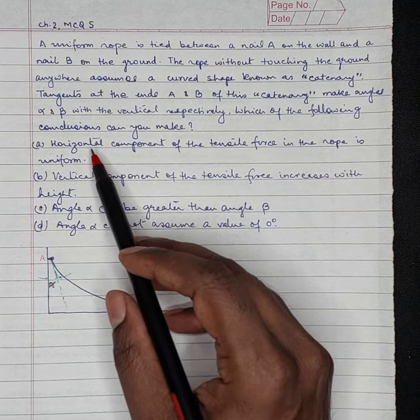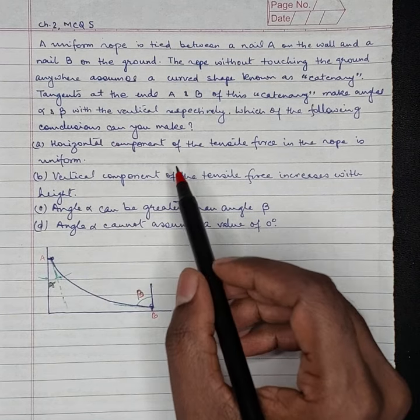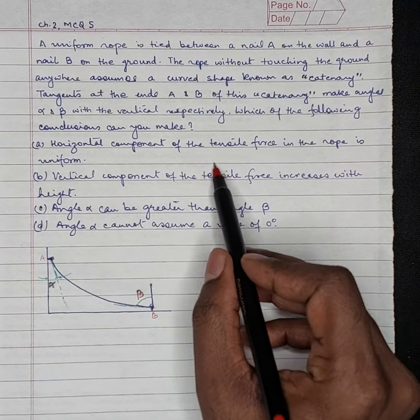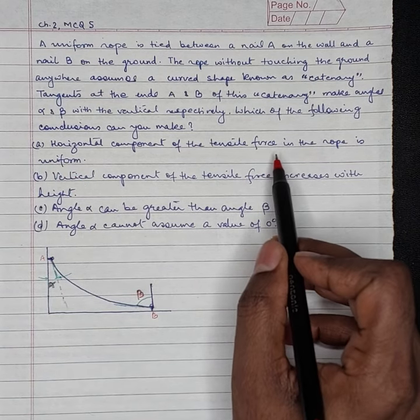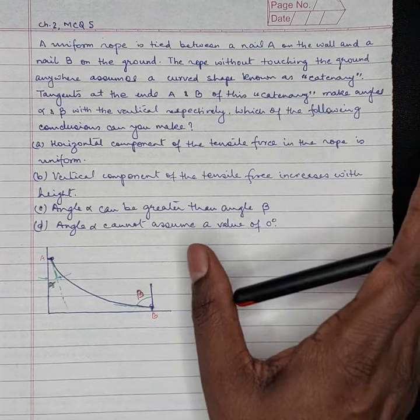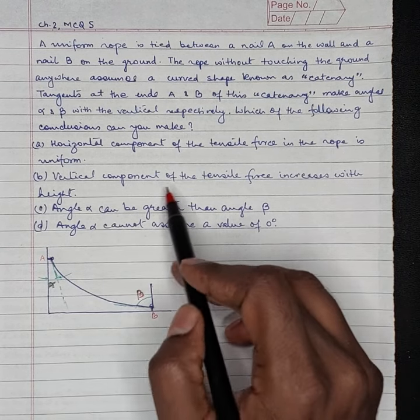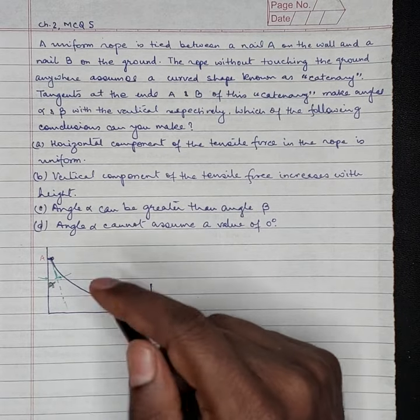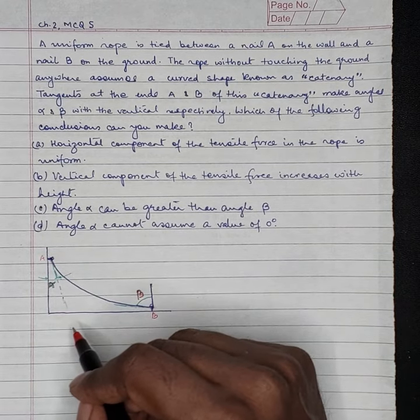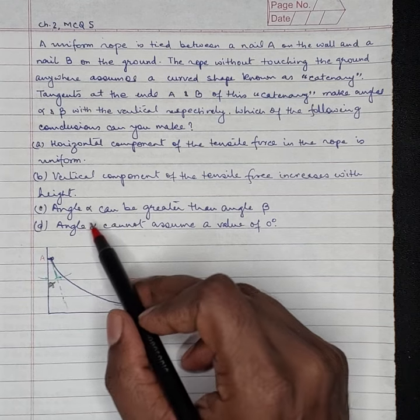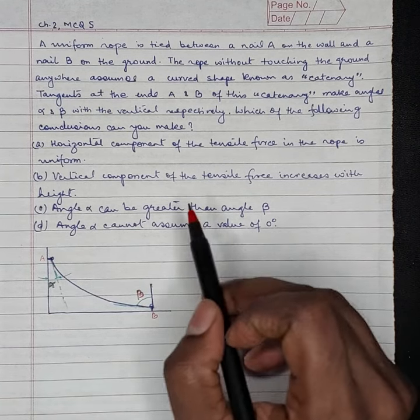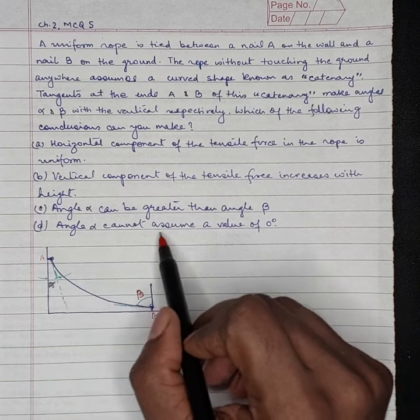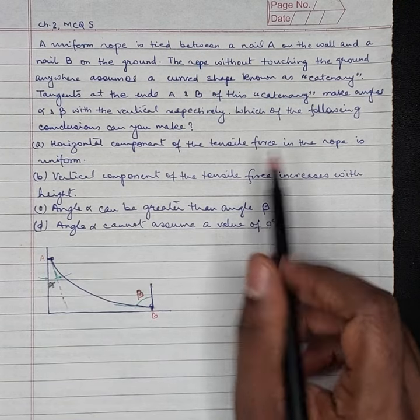Which of the following conclusions can you make? A is horizontal component of the tensile force in the rope is uniform. B is vertical component of the tensile force increases with height. C is angle alpha can be greater than angle beta. D is angle alpha cannot assume a value of 0 degree.